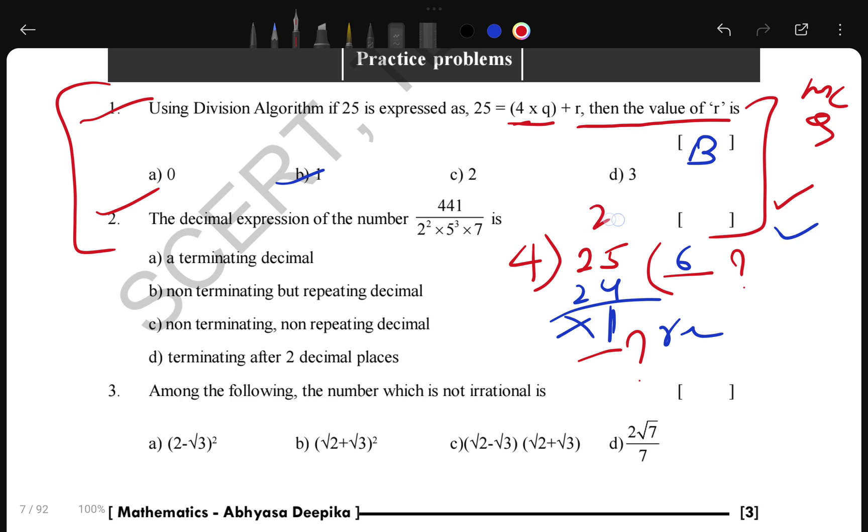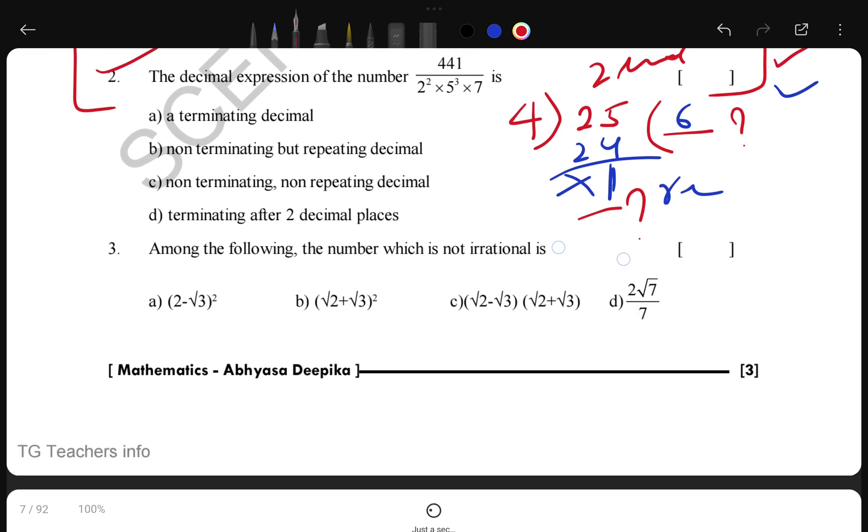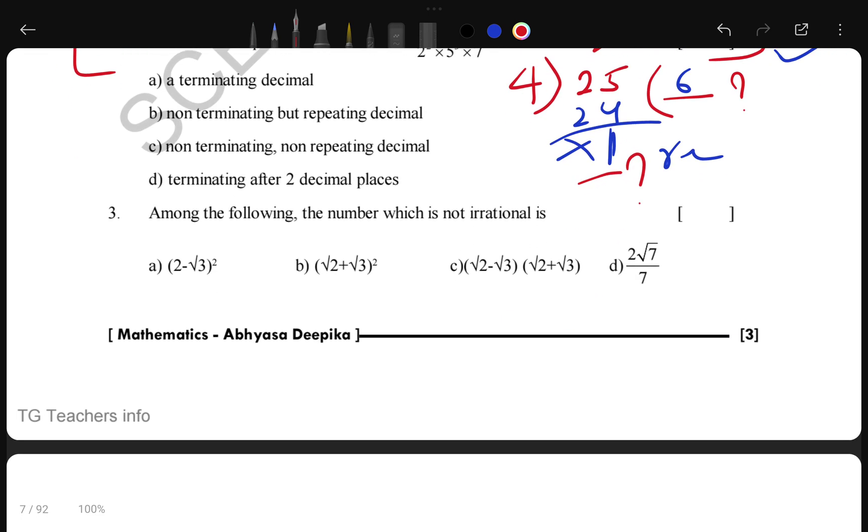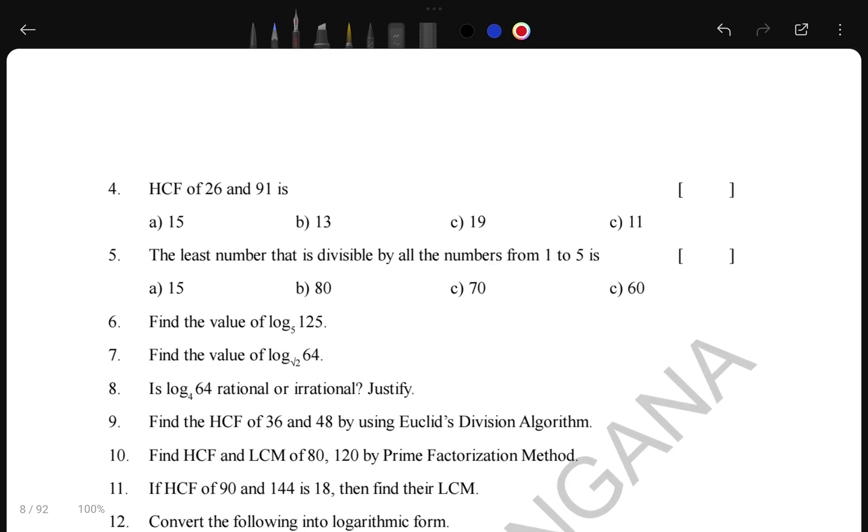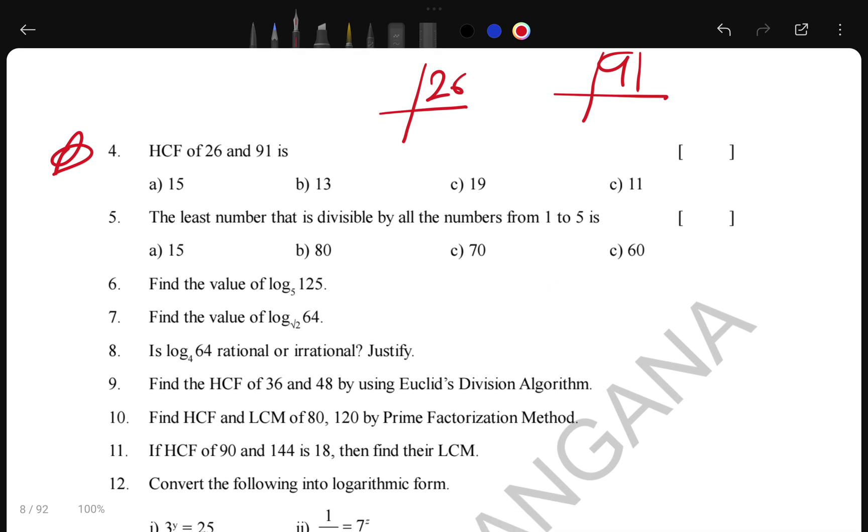This is important. This question is also very important. These two questions definitely come in your examination and each of these two questions carry two marks. You have to practice these questions. You have to prove that this one is irrational. This is important - find HCF of 26 and 90. You have to find the HCF and which is common, then you have to multiply and you will find out your HCF.